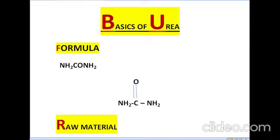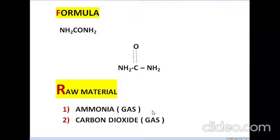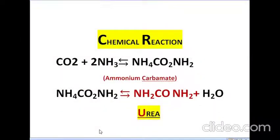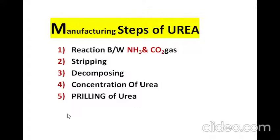The formula of urea is NH2-CO-NH2. The raw materials are two types: ammonia gas and carbon dioxide gas. Both reactants are in gaseous phase. The chemical reaction occurs in two stages: in the first step, CO2 and NH3 react to form ammonium carbamate, and in the second stage, ammonium carbamate decomposes into urea.